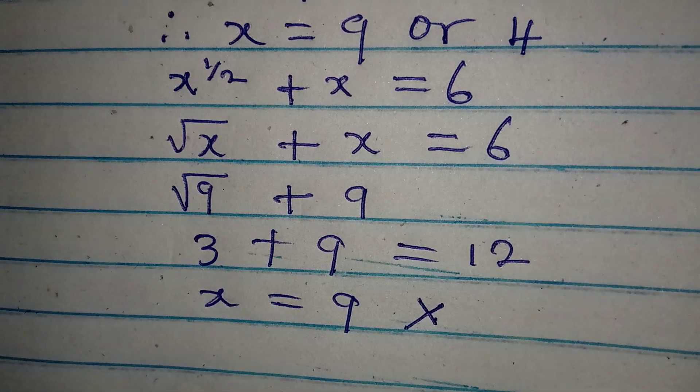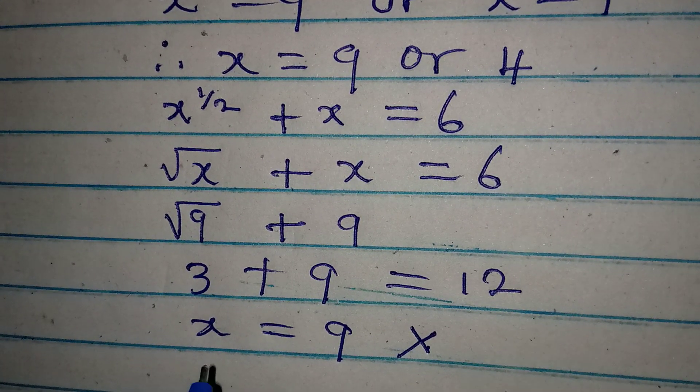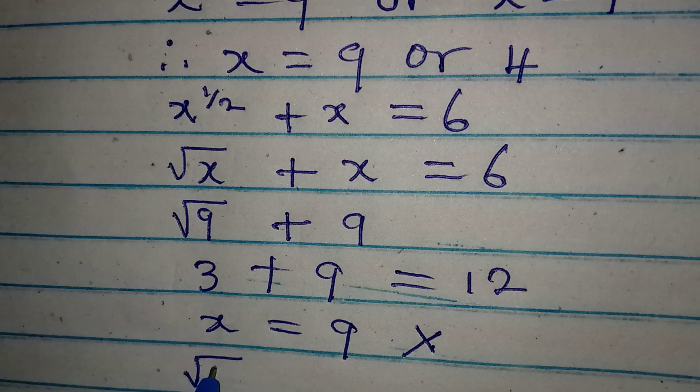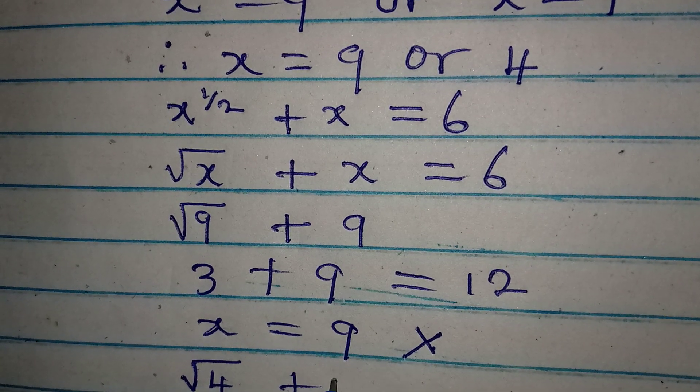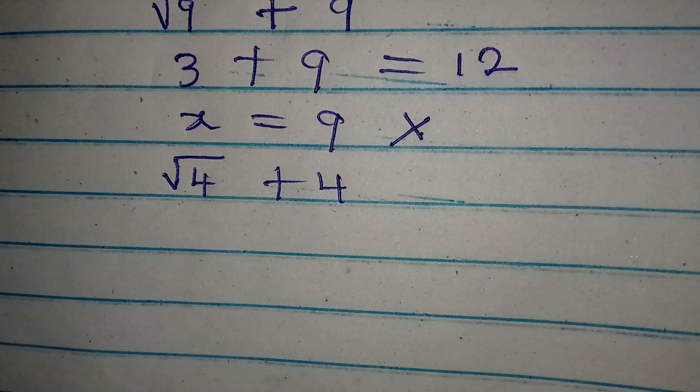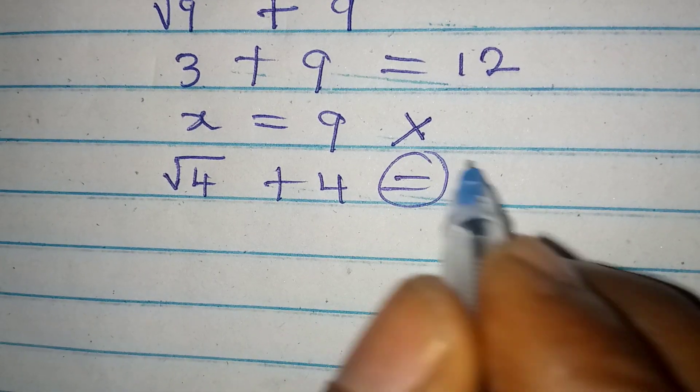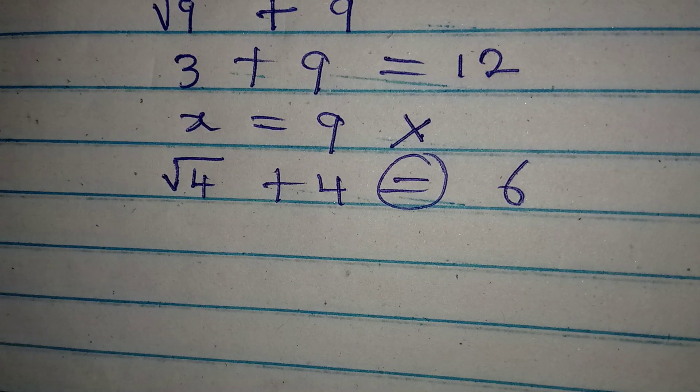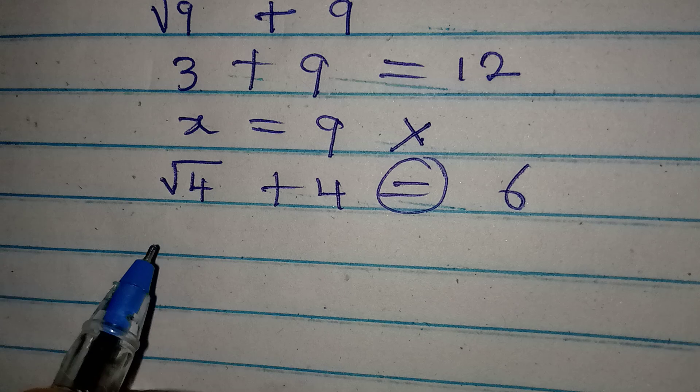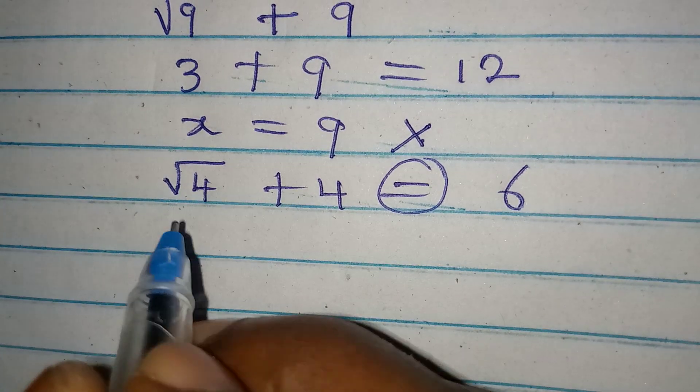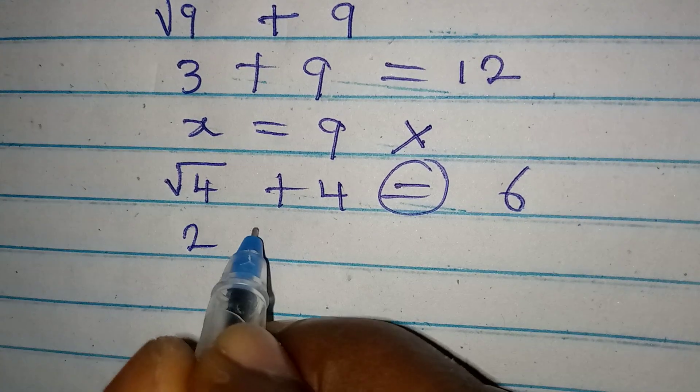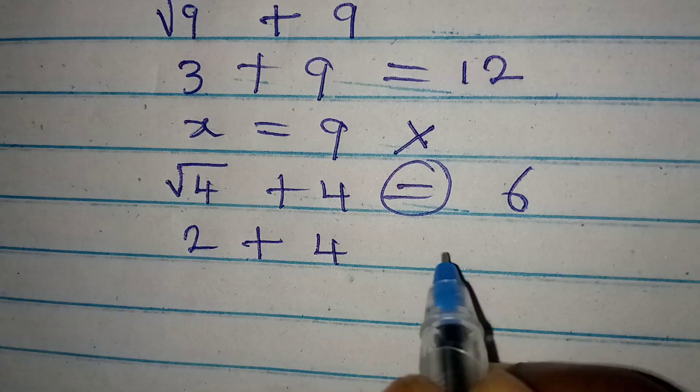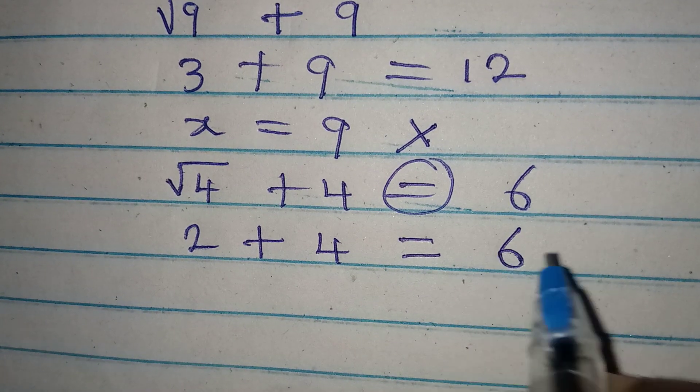Now let's put in x equal to 4. We have square root of 4 plus 4, and this is expected to be equal to 6. It's actually equal to 6 because 4 is a perfect square and its square root is 2. 2 plus 4 equals 6, and this is a confirmation that x equals 4 satisfies the equation.